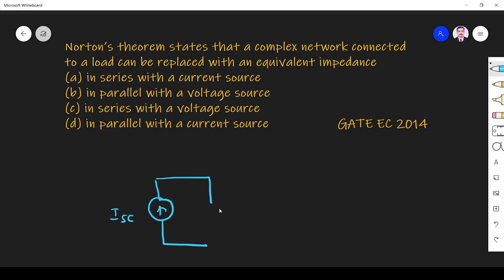in parallel with resistance, right? Rn—that resistance is called a Norton resistance. So here, whatever be the network, the load—here it will be the load.